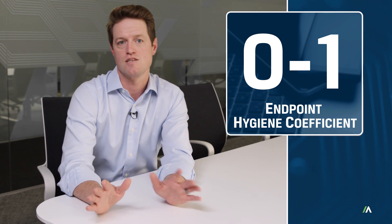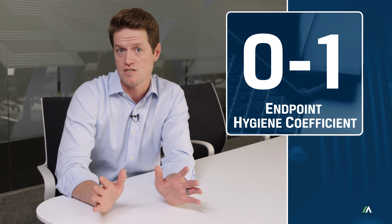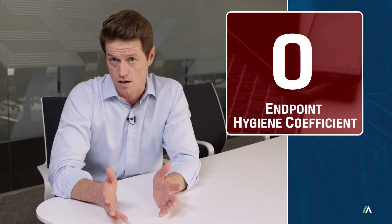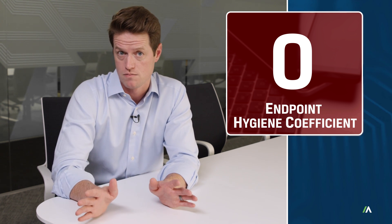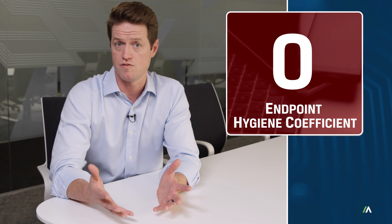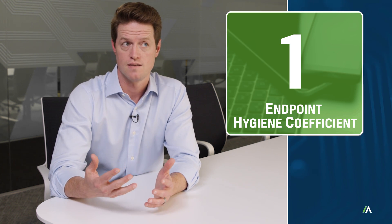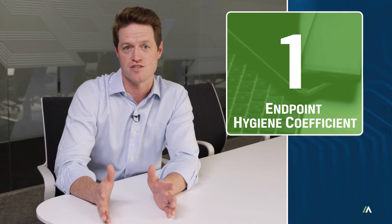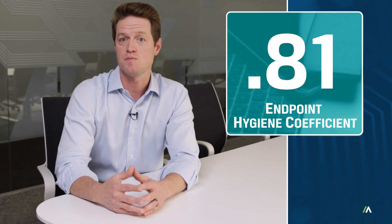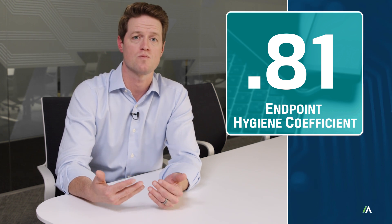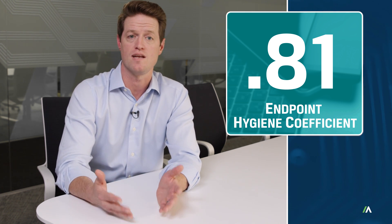When no single device aligns with my picture of hygiene, my endpoint hygiene coefficient is zero. This is rare, so rare that we can rule it out. But just as rare is an endpoint hygiene coefficient of one. If only our devices remained that pristine. So imagine an endpoint hygiene coefficient of 0.81 — this means that some, if not all, devices are pulling us away to some degree from where they need to be.